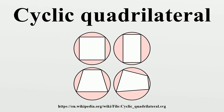Special cases: any square, rectangle, isosceles trapezoid, or antiparallelogram is cyclic. A kite is cyclic if and only if it has two right angles. A bicentric quadrilateral is a cyclic quadrilateral that is also tangential, and an ex-bicentric quadrilateral is a cyclic quadrilateral that is also extangential.